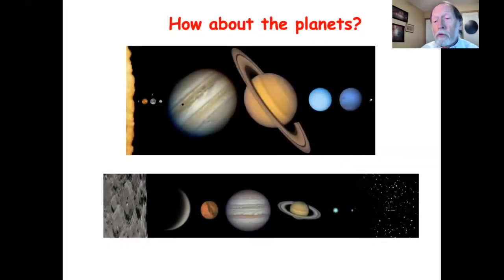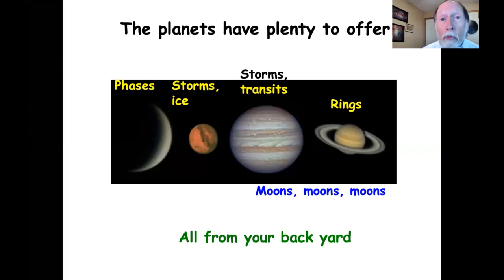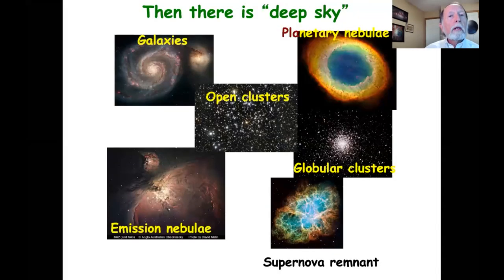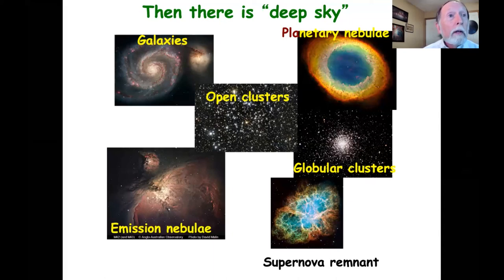Let's turn to the planets in our solar system. In a modest amateur instrument, you can see such things as the phases of Venus, storms and ice caps on Mars, bands, storms, the Great Red Spot, and moon transits on Jupiter, and at different times of the year, various angles and shadows of the rings of Saturn. Amateurs usually refer to objects outside our solar system as items in the deep sky. In a medium to large aperture telescope, you can see objects that are much further away and much more massive than the items in our solar system. These pictures are the result of hours of imaging, and what you will see at the eyepiece is different — I will explain that a bit more later in the program.